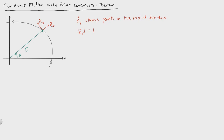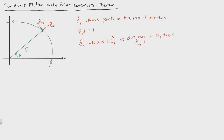Now for e theta: e theta is always perpendicular to er. One thing to note is that this does not imply that e theta is tangent to the path of motion.